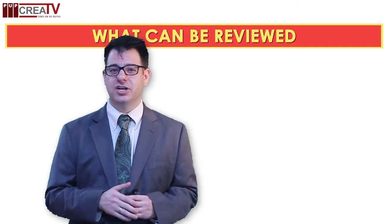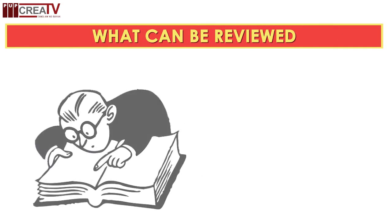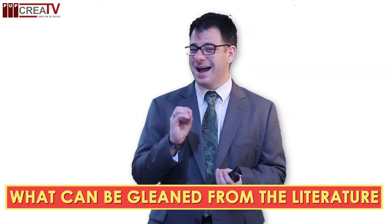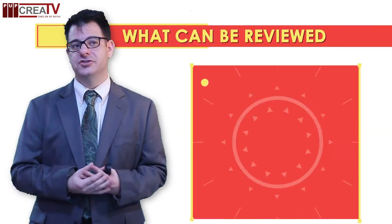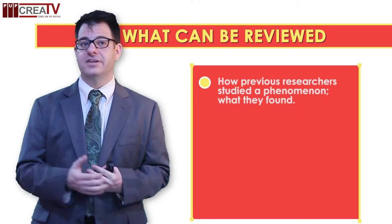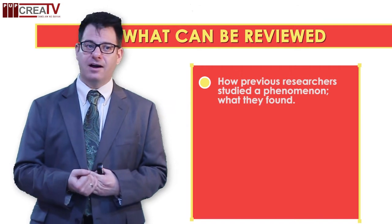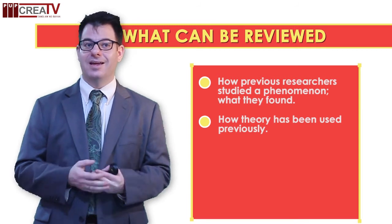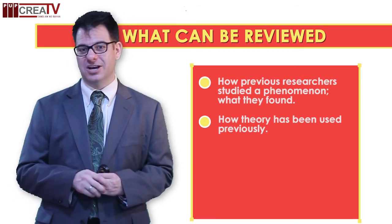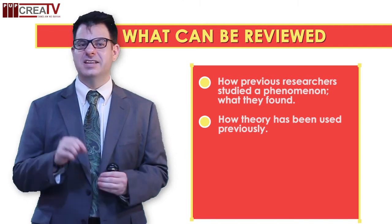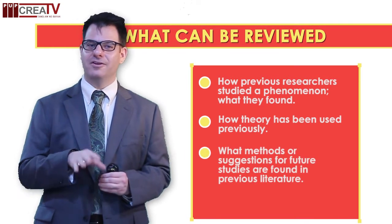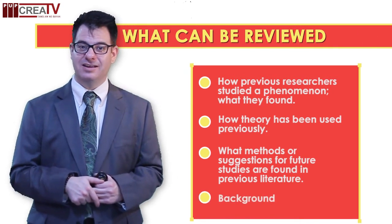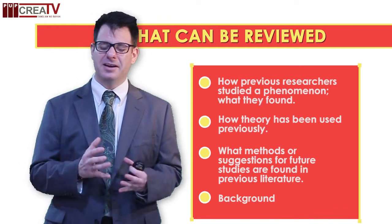When you're reviewing, remember to continue making your point. How does this literature assist you and your readers in understanding your study? Things you can glean from the literature are not just the findings — you should also look to previous research studies, how others have studied a phenomenon, and what they found. Consider how the theory has been used previously and applied within this or similar settings. Sometimes researchers overlook how others suggest methods or future studies should be carried out, and what brought them to study the item which they're studying.